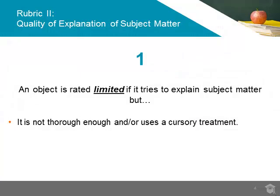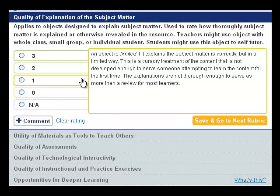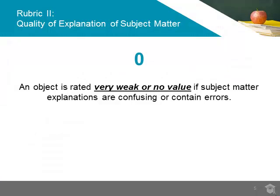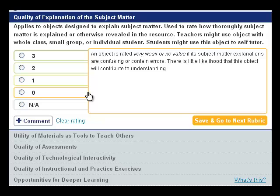An object would be rated limited, a 1 rating, if it tries to explain the subject matter but is not thorough enough or uses a cursory treatment that is not sufficiently developed for a first-time learner. If an object seems to be making an attempt to explain subject matter but is confusing or contains errors, it would be rated weak or of no value and given a 0 rating for this rubric. This would be the case if there is little likelihood that the object would lead to a clear understanding of the subject matter.